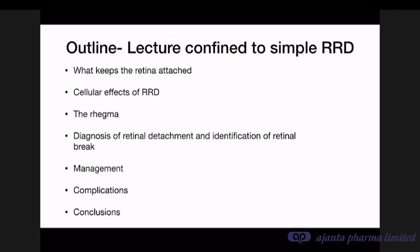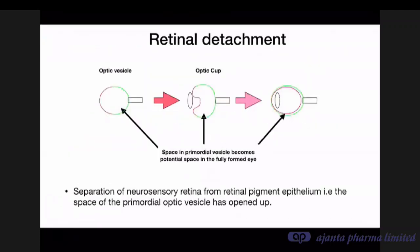Retinal detachment is a separation of the neurosensory retina from the retinal pigment epithelium. But if you go back into embryology, we realize that this is actually a physical space present in the embryologically developing eye — in the primordial optic vesicle, which was the central space.